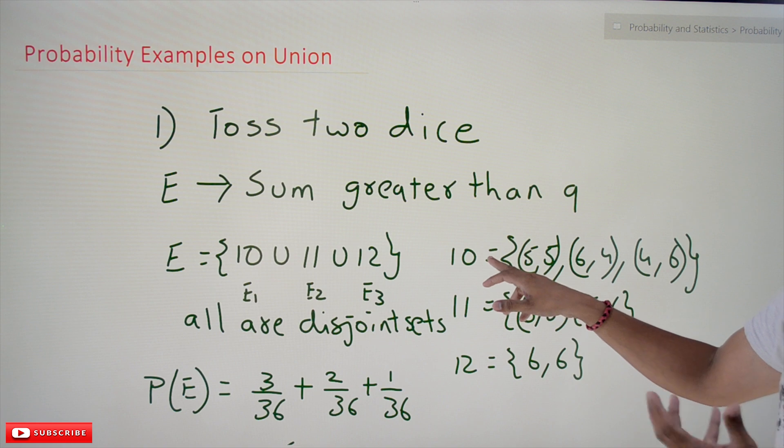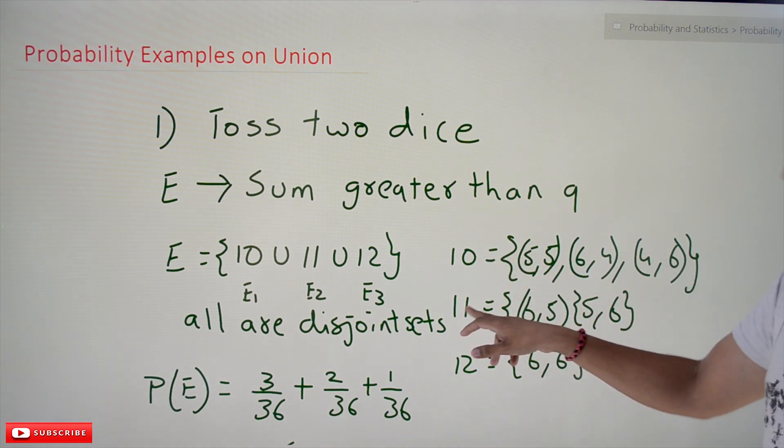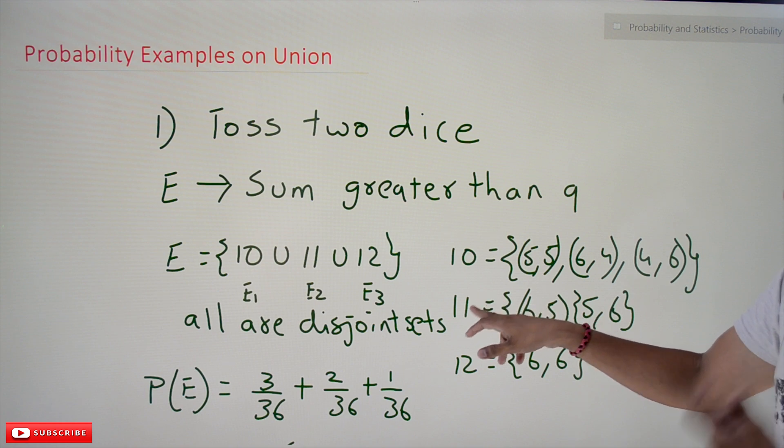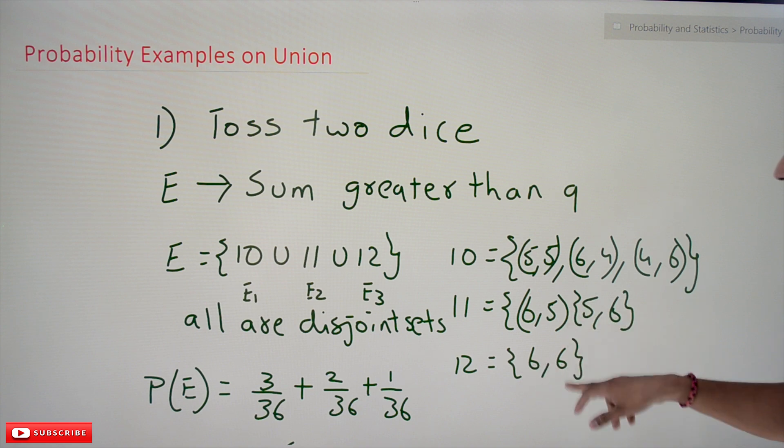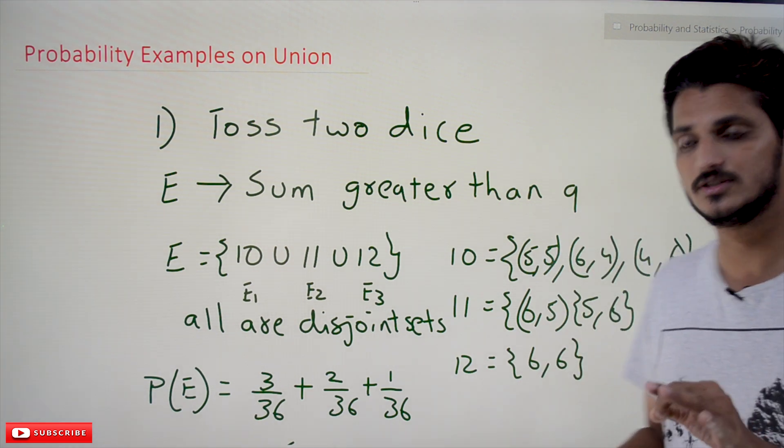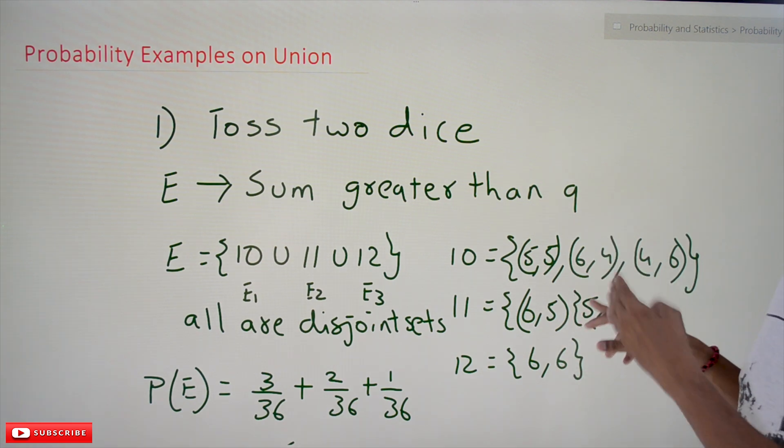10 is the events 5 comma 5, 6 comma 4, 4 comma 6. The events that come under 11 are 6 comma 5, 5 comma 6. Under 12 is 6 comma 6. All these are disjoint events. There is no common element between these three sets, these three events.